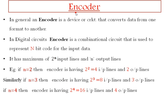So what is an encoder? In general, an encoder is a circuit or device that converts data from one form to another form. In digital electronics, an encoder is used to convert a decimal number into binary — we know decimal numbers 0 to 9 — so we need to convert decimal numbers into binary using this encoder circuit. In digital electronics, an encoder is a combinational circuit that is used to represent an n-bit code for the input data, where input data is 0 to 9 and the n-bit code is nothing but the binary values.